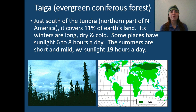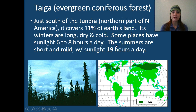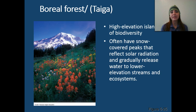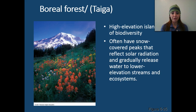The taiga is an evergreen coniferous forest — meaning cone-bearing trees — located just south of the tundra, in the northern part of North America. It covers about 11% of Earth's land. Its winters are very long, dry, and cold, with some places only having sunlight for 6 to 8 hours a day. Summers are short and mild, with sometimes up to 19 hours of sunlight. Boreal forests are also found at very high elevations and are called high-elevation islands of biodiversity. They often have snow-covered peaks that reflect solar radiation, and as that snow melts it trickles down through streams, providing water to plants and animals in those ecosystems.